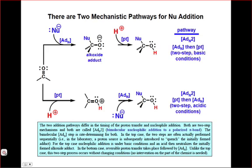There are two mechanistic pathways for the addition of nucleophiles to carbonyl groups. Depending on the conditions, whether they're acidic or basic, one of these two pathways will be followed. Both pathways are referred to as ADN2 type pathways because the addition of the nucleophile, which is a bimolecular step, is the rate determining step in both cases.